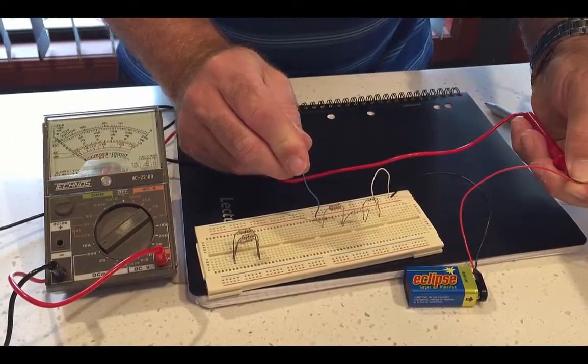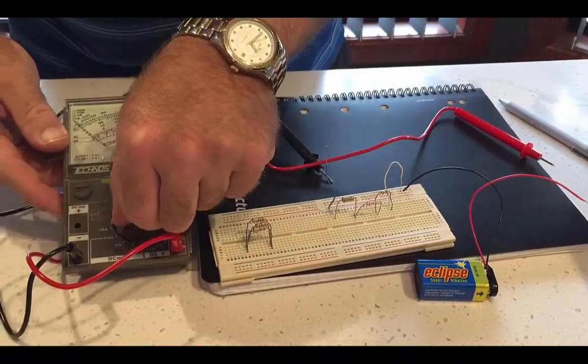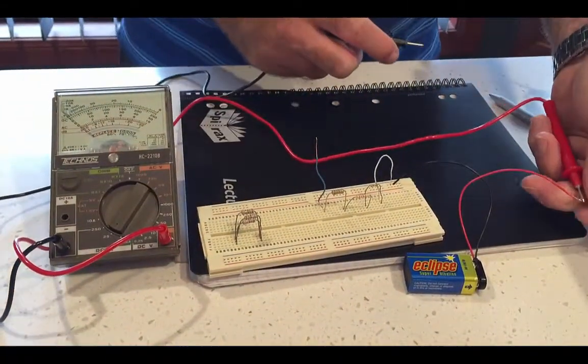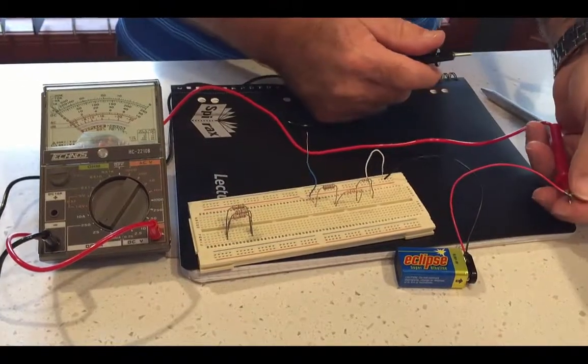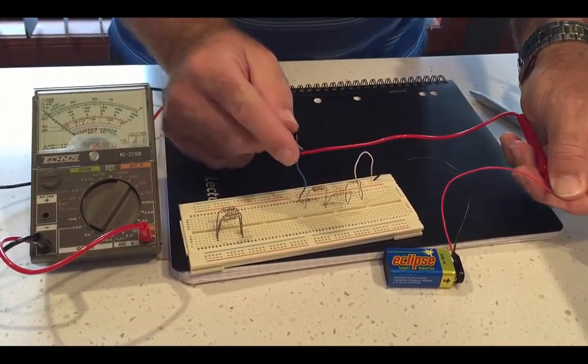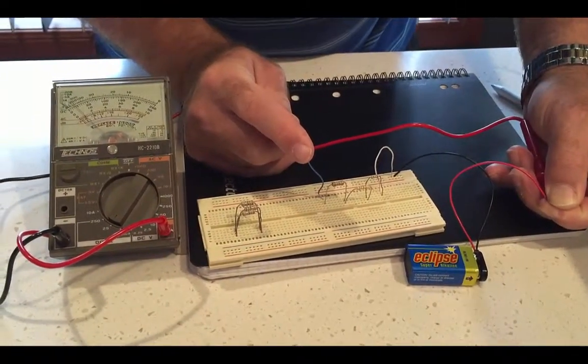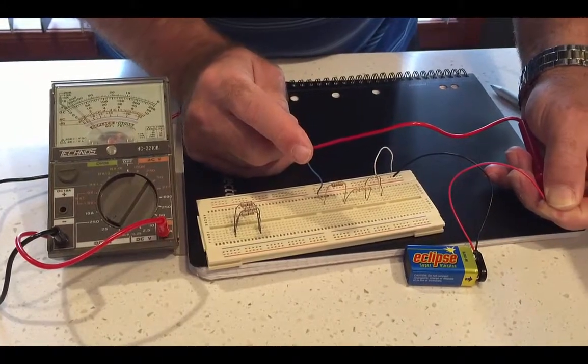So I'm not getting a reading there. So what it means is I might need to go down in terms of my scale. So I keep trying it till I find something that actually works. Okay, see it's sort of registered there. So the scale I'm using there is 25 milliamps.